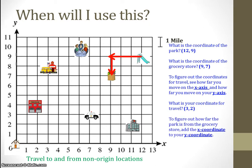Just like in our last problem, to figure out how far the park is from the grocery store, we have to add the x-coordinate from our travel to our y-coordinate for our travel. When we do that, we find 3 plus 2 is going to be 5 miles. So, to travel from the park to the grocery store, you must travel 5 miles.